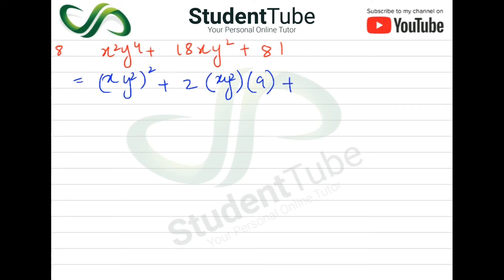Then plus 81. So if we solve this 81, then this will be 9 square, so 9×9 = 81.